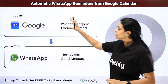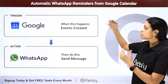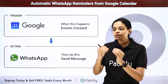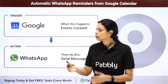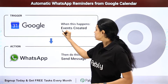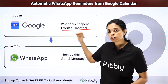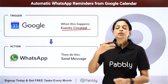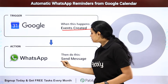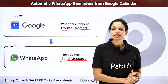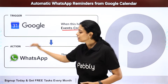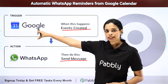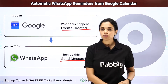Let's say that you automatically have to send WhatsApp reminders from Google Calendar. If there is any event scheduled on your Google Calendar, every time a new event is created, a message will automatically be sent on WhatsApp to the person as a reminder that they have this particular event scheduled. For this, you will have to integrate these two applications where your trigger application would be Google Calendar and your action application would be WhatsApp.